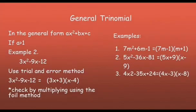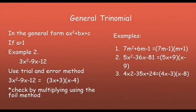Multiplying outer terms: 3x times negative 4 gives negative 12x. Multiplying inner terms: x times 3 gives 3x. Adding the outer and inner terms: negative 12x plus 3x gives negative 9x. Last terms: positive 3 times negative 4 gives negative 12. Other examples — number 1: 7m squared plus 6m minus 1 factors as the quantity 7m minus 1 times the quantity m plus 1. Number 2: 5x squared minus 36x minus 81 factors as the quantity 5x plus 9 times the quantity x minus 9. Number 3: 4x squared minus 35x plus 24 factors as the quantity 4x minus 3 times the quantity x minus 8. All of these may be checked using the FOIL method.